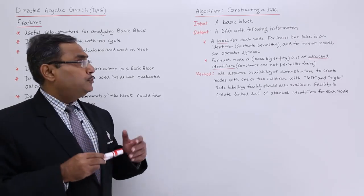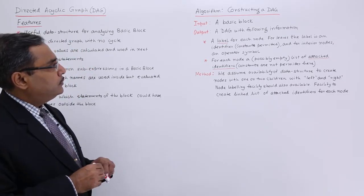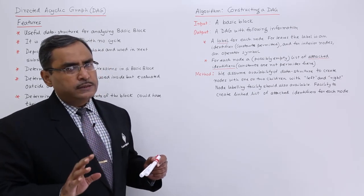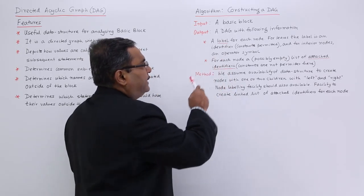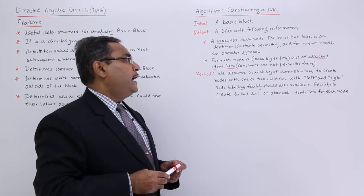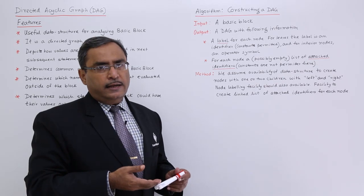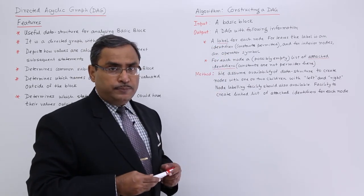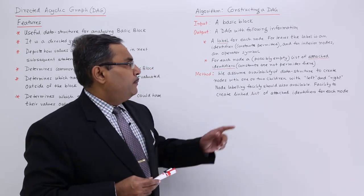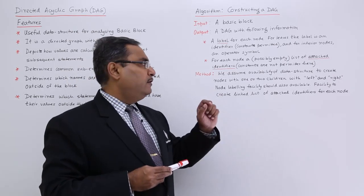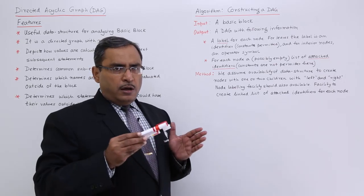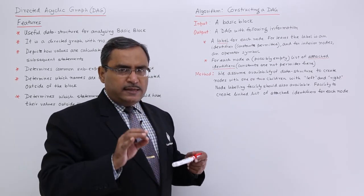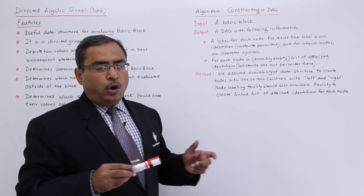Input: a basic block. Output: a DAG with the following information. First, a label for each node — a graph will consist of multiple nodes and for each node there will be some label. For leaves the label is an identifier or a constant, and for interior nodes it is an operator symbol. Operators cannot appear as leaves; they will be interior nodes. Second output: for each node, possibly empty, a list of attached identifiers. Constants are not permitted here, because for evaluation of common sub-expressions some names may be similar and will be listed in a series, but two constants cannot be similar.